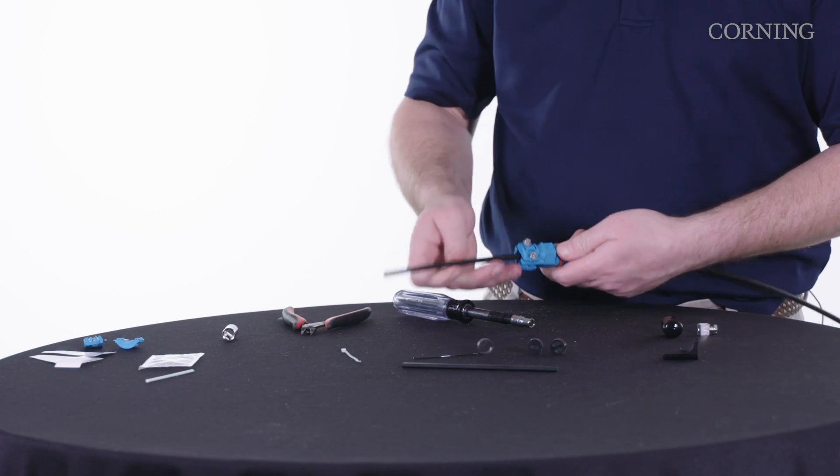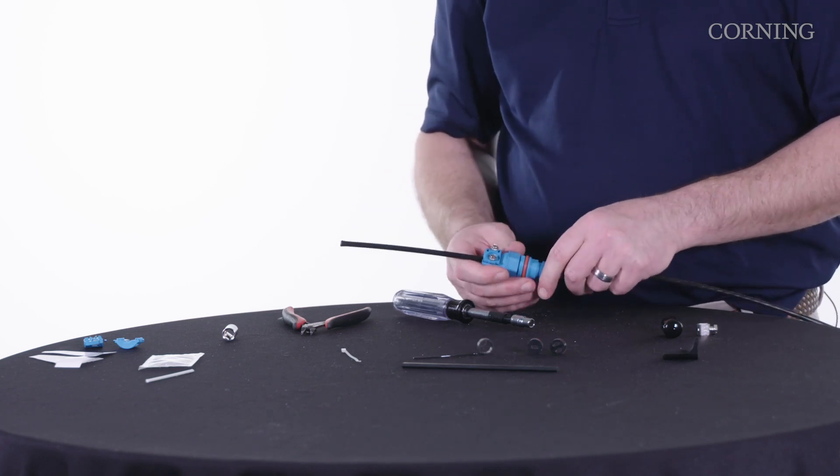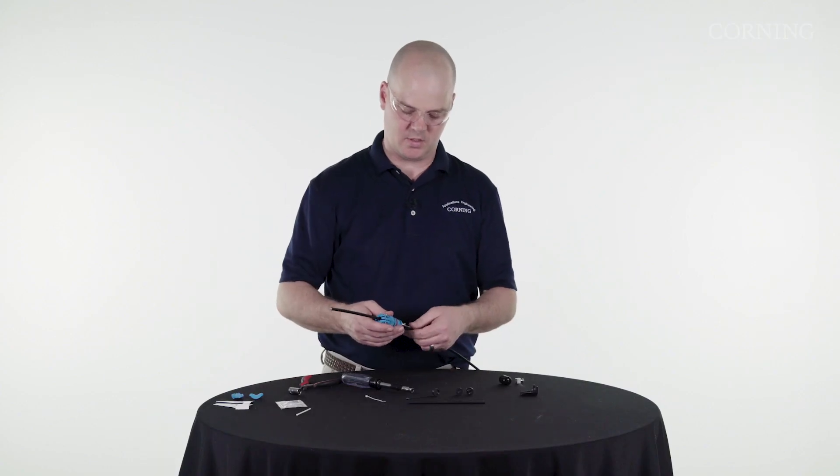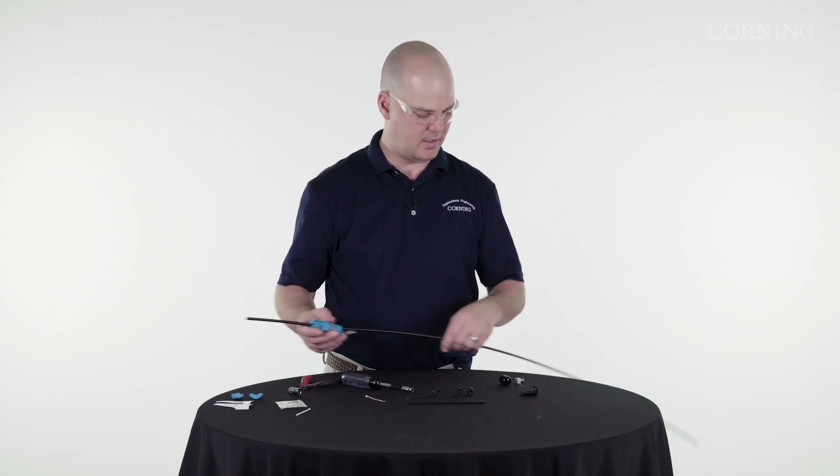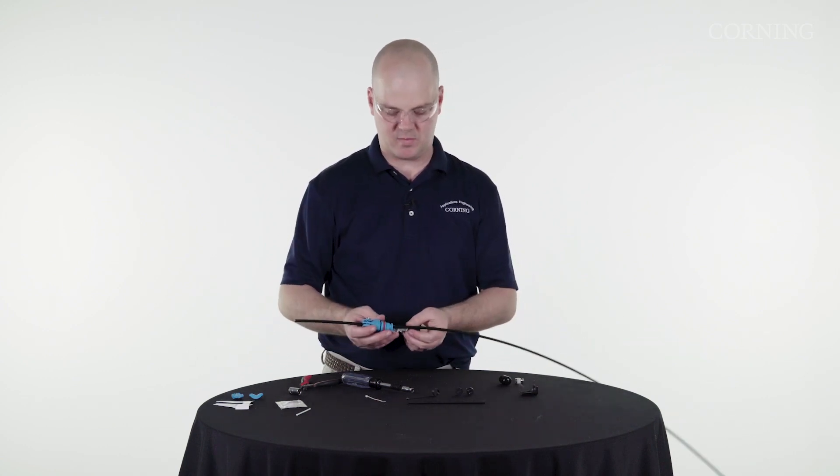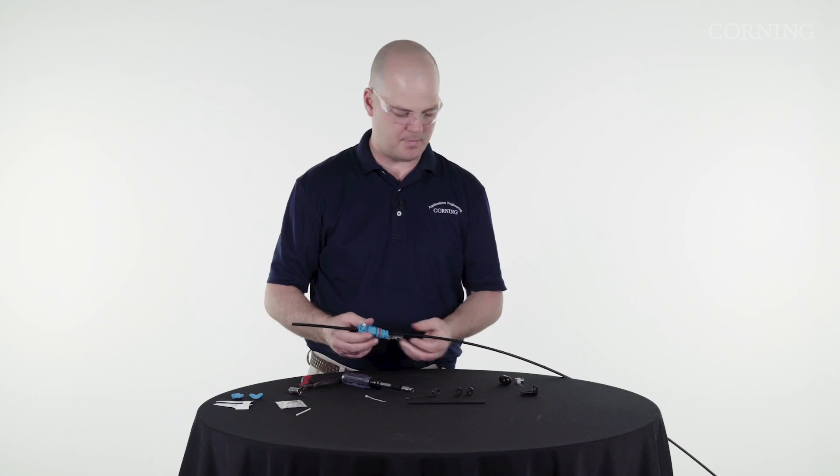It's still loose, just getting it where I want it. Everything's still loose on here. What I want to do now is access some of this cable to get to the central strength member so I can do my strain relief, and then I'll tighten all this up.